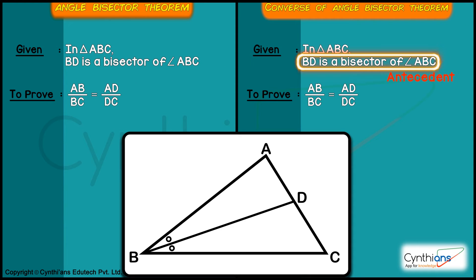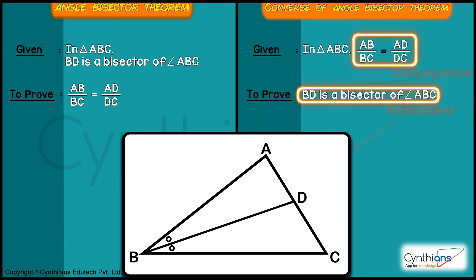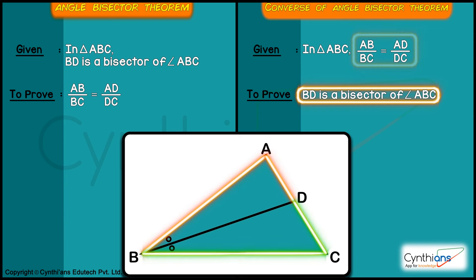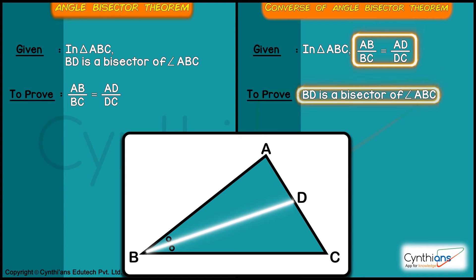This antecedent and consequent will be swapped. That means we will be given that these ratios are equal. Then prove that BD is the bisector of angle ABC.